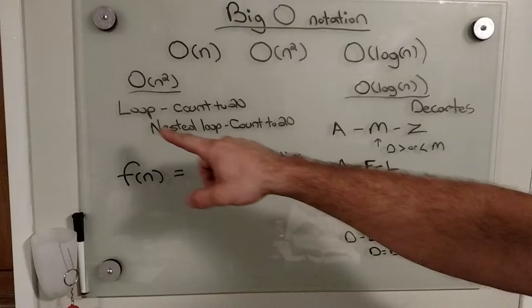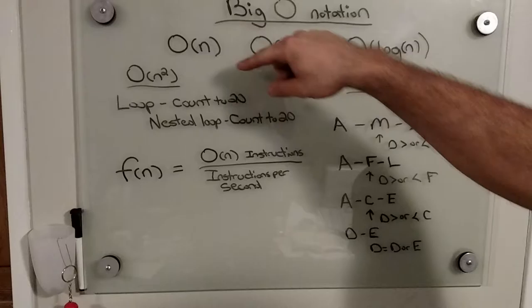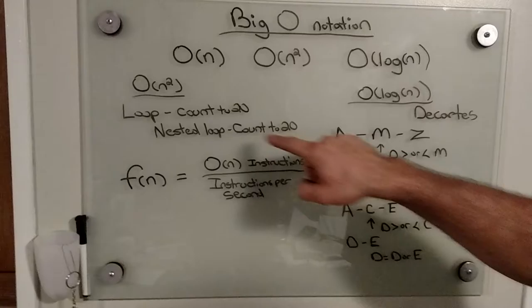With O(n²), you have your first set of instructions, which is a loop. In that loop, the instructions are to count to 20. Now inside that loop, there's another loop, which also counts to 20.